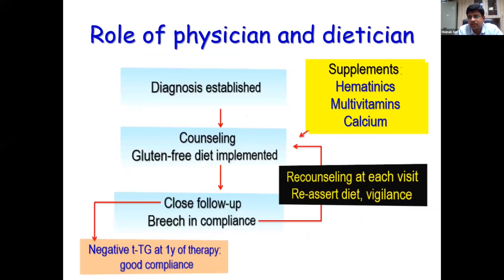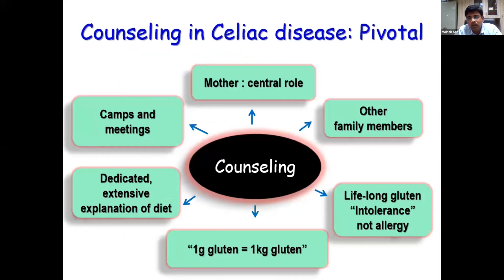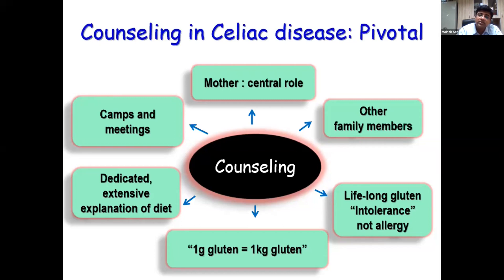The role of the dietician and physician is to counsel the patient, give a gluten-free diet, and closely follow up, re-counseling and reassessing the diet at each visit. The mother plays the pivotal role in counseling — she is central, she is in the kitchen, she can cook for the child. All family members need to play a good role. One gram of gluten equals the same damage as one kilogram, so you cannot give even a little bit. You should hold camps and meetings periodically to reassert the dietary goals.